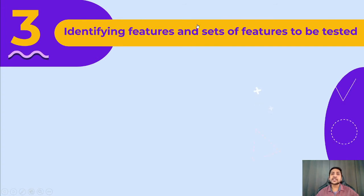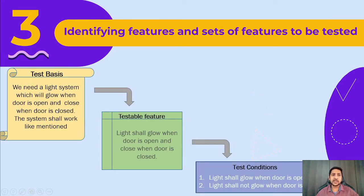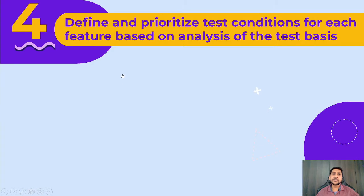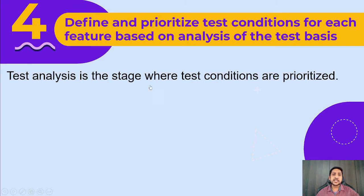Moving to the third point: identifying features and set of features to be tested. For example, we have a requirement that the light should glow when the door is open, and not glow when the door is closed. From the testable features we derive the test conditions. Identifying features and set of features to be tested is what we do during the test analysis stage.